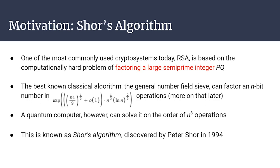The specific quantum algorithm we're covering is Shor's algorithm. One of the most common cryptosystems is RSA, which is based on the idea that factoring a large semi-prime integer — a number that is the product of exactly two prime factors — is computationally hard. Computationally hard means it takes so long to solve that even a supercomputer can't crack it. The useful property of such problems is that they're hard to solve, but easy to verify: to check a factorization, you just multiply two numbers together.